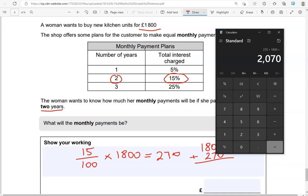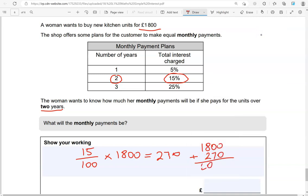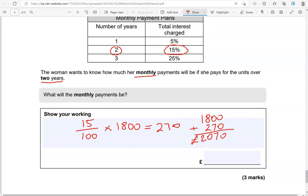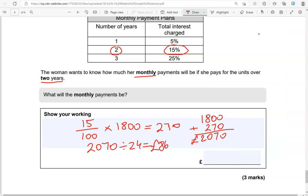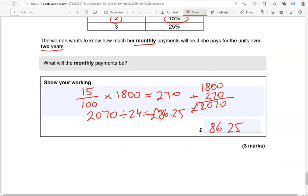She will pay them on a monthly basis. So, 2 years, 12 months in each year, that will be 24 months. So, 2,070 divided by 24 gives us 86 pounds and 25 pence. That will be the monthly payment. And this is the end of the questions.